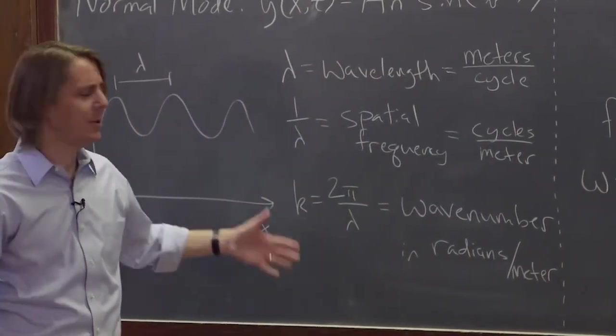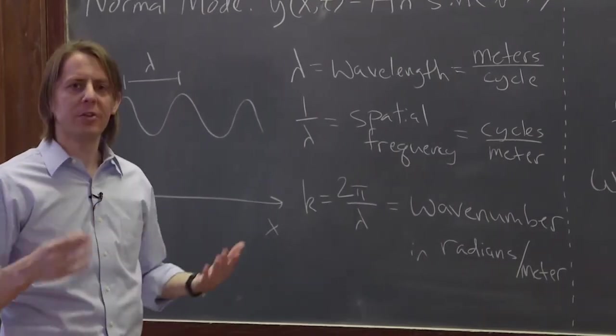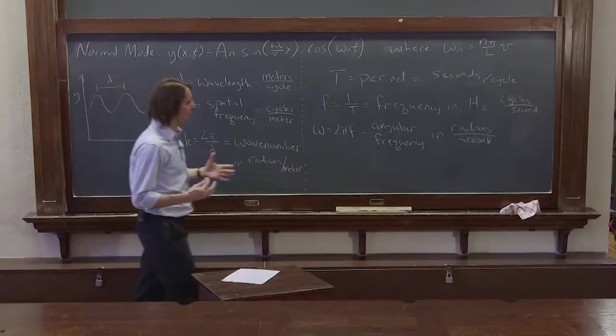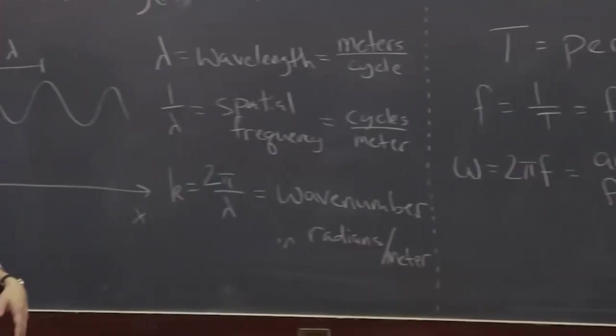It's just 2π over lambda. So you may have seen it before, k is 2π over lambda. I just want you to understand what it is, why it is, where it came from. It's because we like to do things in radians in physics. Radians per second is omega. Radians per meter, the spatial part, is k.